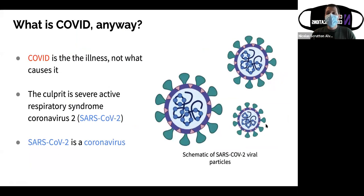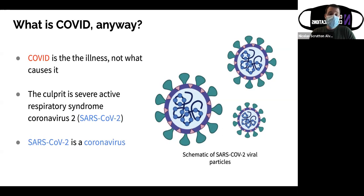So what is COVID anyway? COVID is the illness — a coronavirus-induced illness — but it's not actually what causes it. The virus itself is called SARS-CoV-2, which stands for Severe Acute Respiratory Syndrome Coronavirus 2. The '19' in COVID-19 is because it originated in the year 2019. SARS-CoV-2 is a type of virus called a coronavirus.